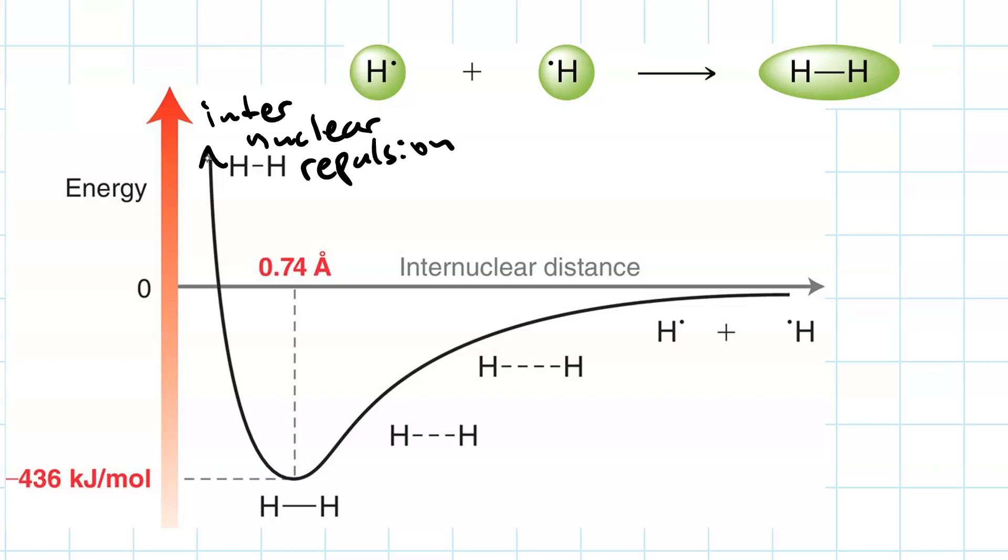In other words, the positive charge of the nucleus on the atom on the left is repelling the positive charge of the nucleus on the atom on the right. And that becomes important as they get too close together. So, the ideal distance where the attractive force is maximized and the repulsive force is not that important is 0.74 angstroms.